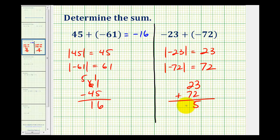So the sum of the absolute values is positive 95, but the sum of the original integers is going to be negative 95, because they're both negative.